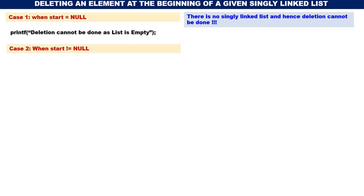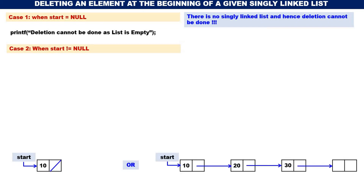Case 2: when start is not equal to NULL, meaning there are some elements in the linked list, so you can delete the first element. We consider two sub-cases: when only one element is there, and when many elements are there. In the first sub-case there is only one element 10, and in the second there are four elements 10, 20, 30, 40. In both cases we have to delete 10.